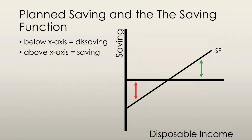We also have the saving function, with disposable income on the x-axis and saving on the y-axis. Points below the x-axis indicate that expenditure exceeds disposable income and that there is dis-saving — people are dipping into their savings to finance their consumption, so savings is actually decreasing. Points above the x-axis indicate that expenditure is less than disposable income and that there is saving — people have extra money that they're putting into their bank accounts.